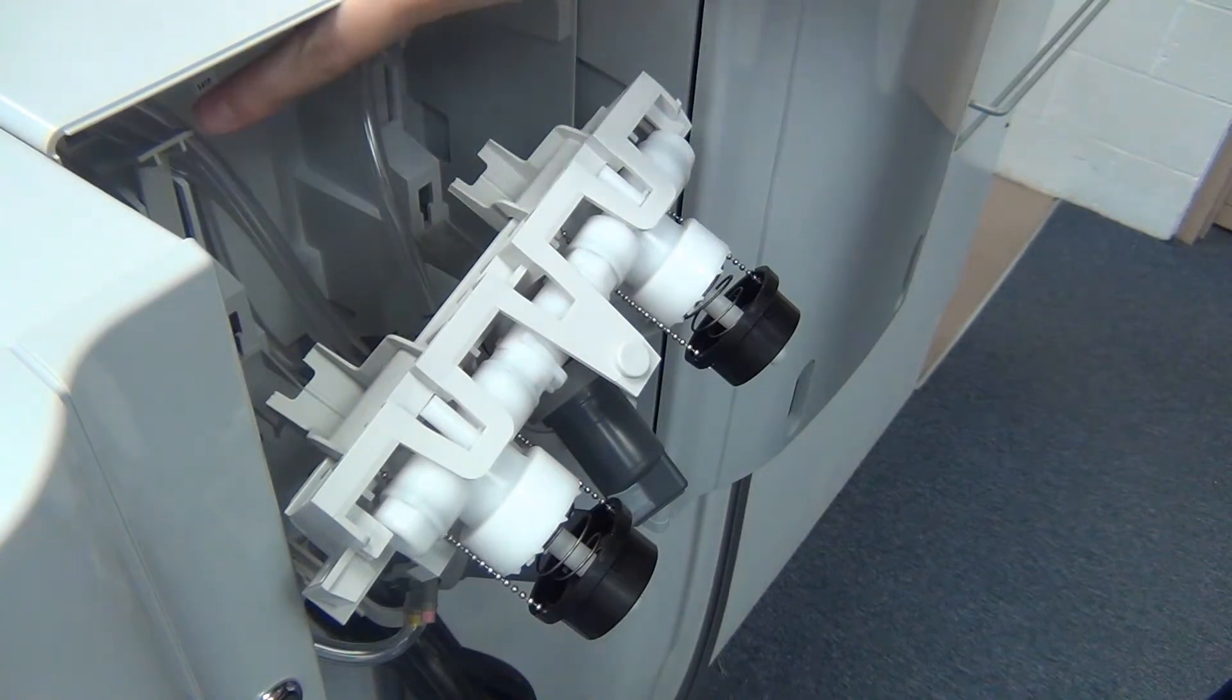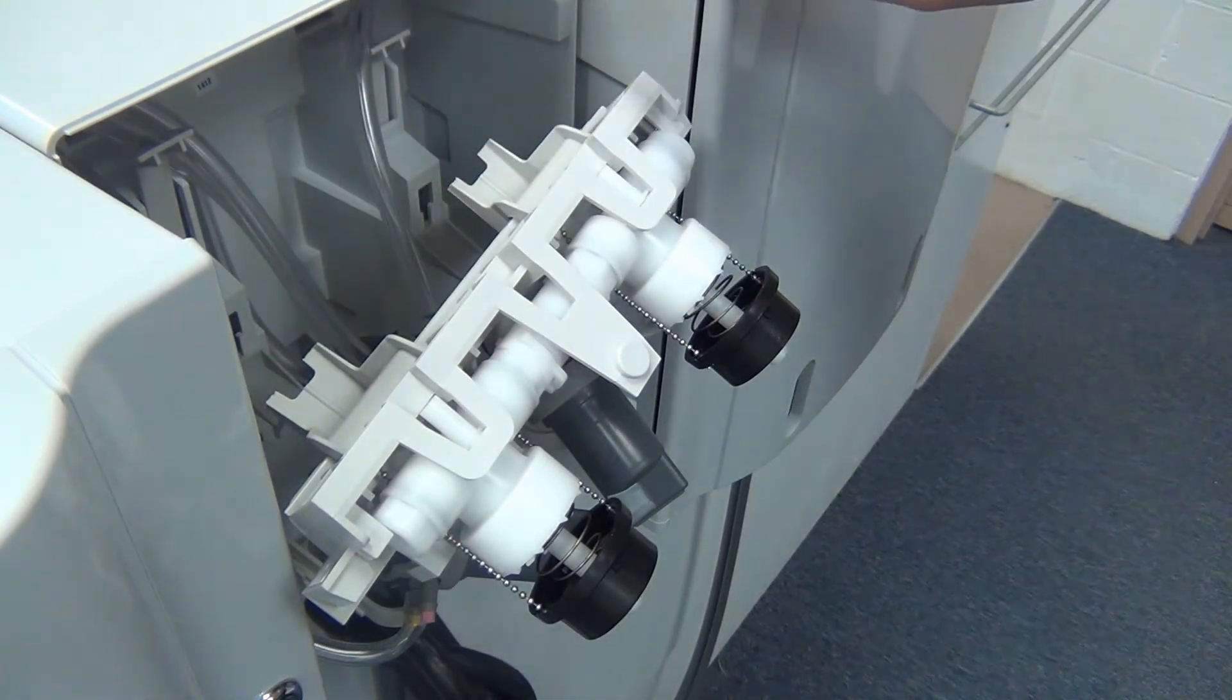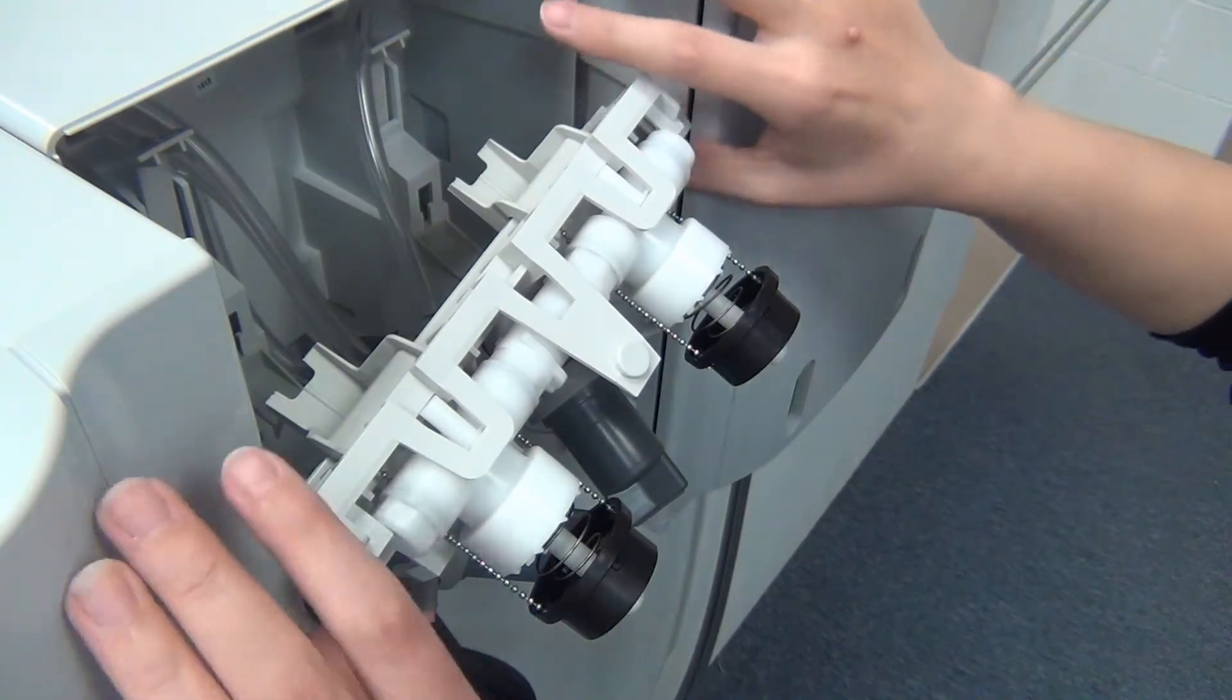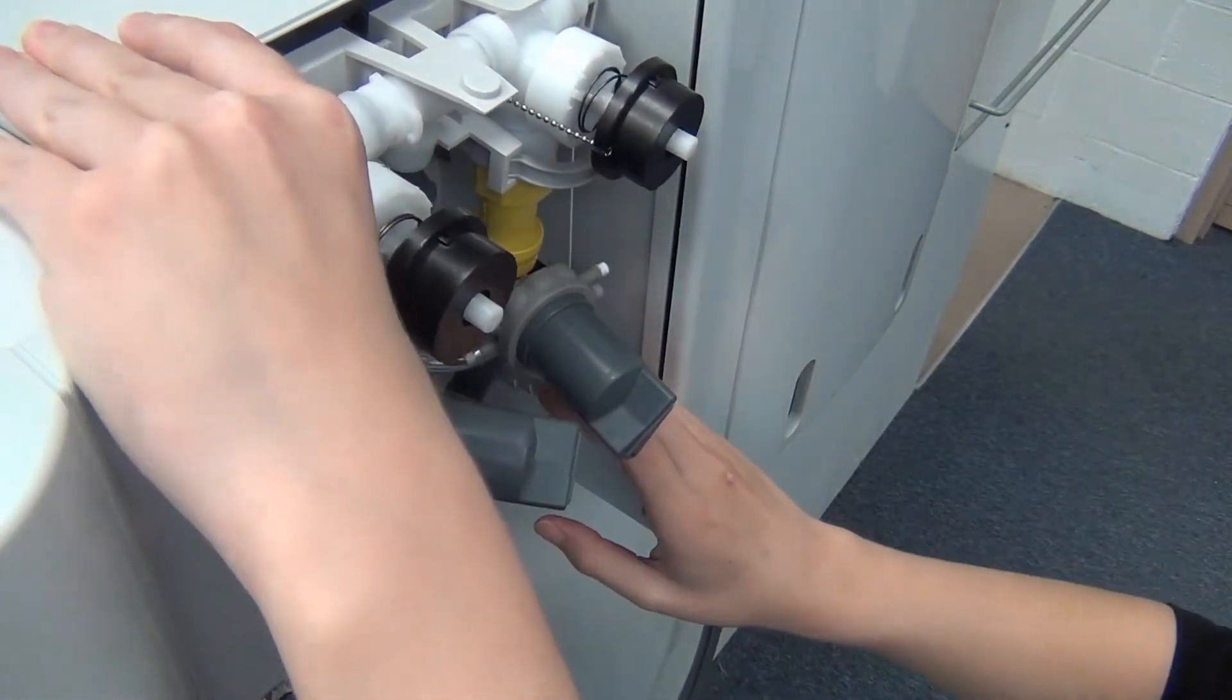When re-securing the valve bracket, make sure these levers are above this piece on both sides of the bracket and the tubes are out of the way. Position the valve bracket back onto the tabs and push in until they click into place.